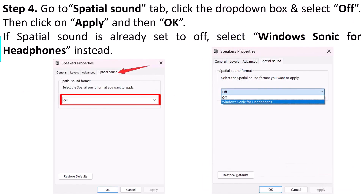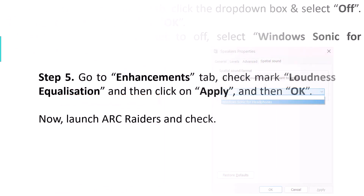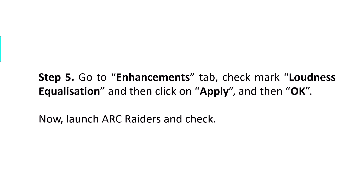Go to the Spatial Sound tab, click the drop-down box, and select Off, then click Apply and OK. Now, if Spatial Sound is already set to Off, then select Windows Sonic for Headphones instead. Then go to the Enhancements tab, check Loudness Equalization, and click Apply and OK. Now launch the Our Creators game and check if your problem is solved.